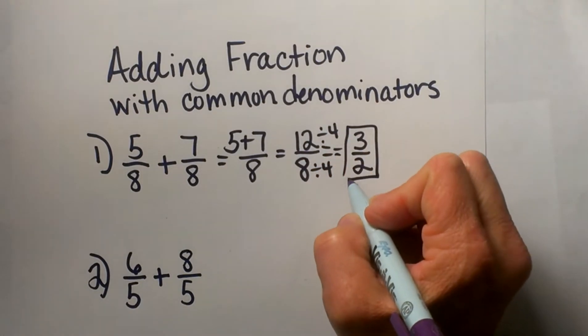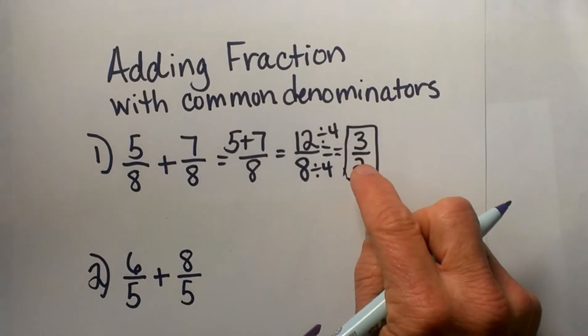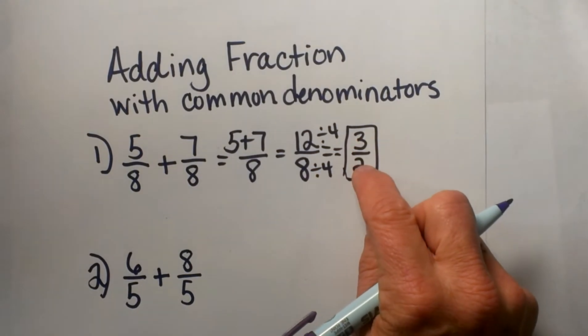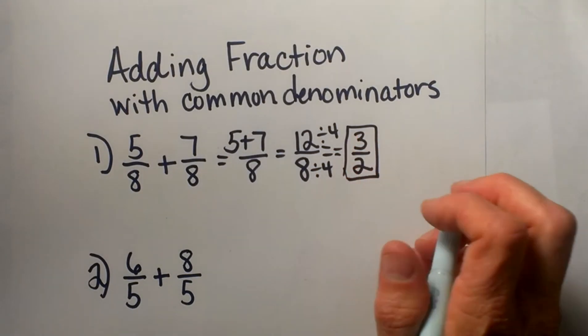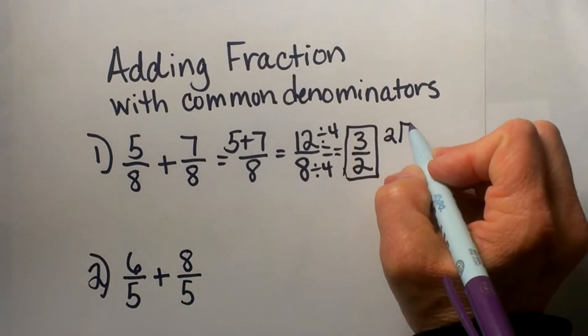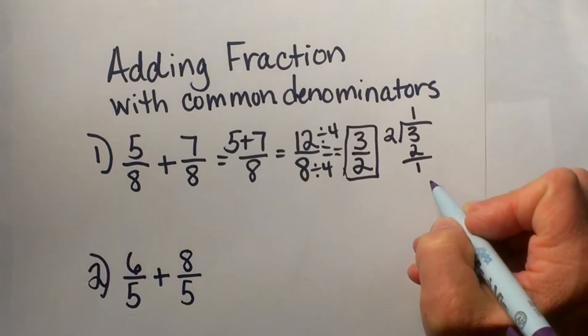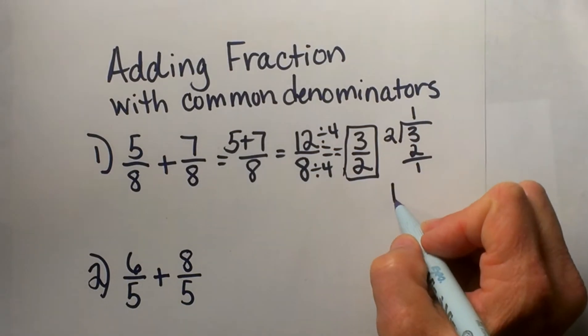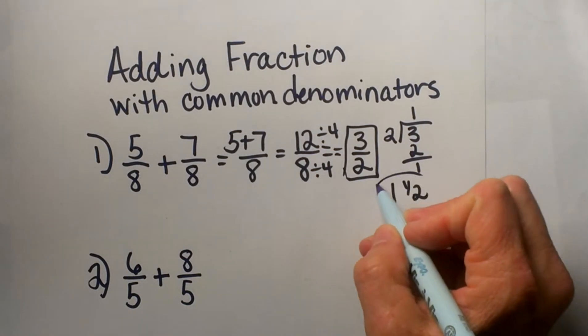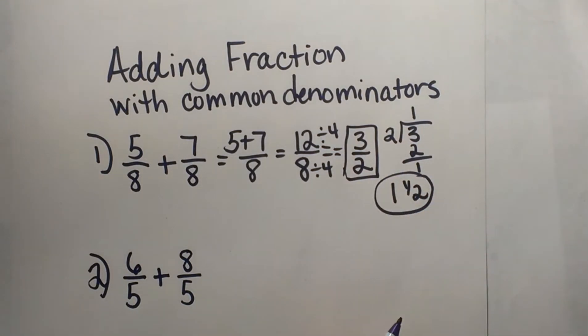If you are asked to switch it to a mixed number, you are going to divide 2 into 3. How many times does 2 go into 3? That is 1 and 1 remaining, so that would be 1 and 1/2. So 3/2 is equal to 1 and 1/2.